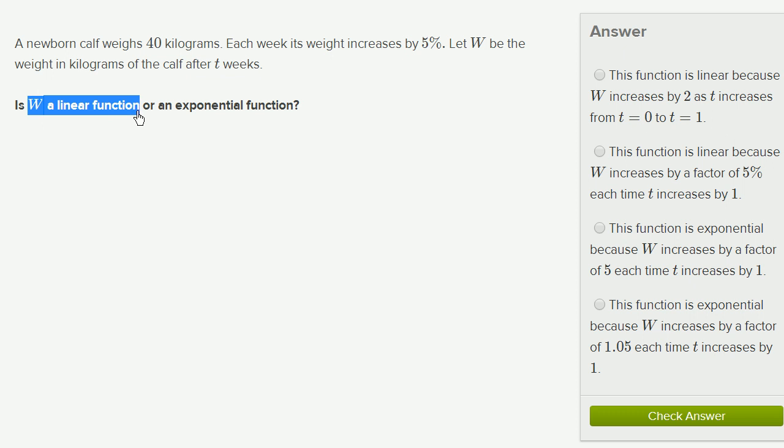So if w were a linear function, that means every week that goes by, the weight would increase by the same amount. Let's say that every week, the mass increased by 5 kilograms. Then we'd be dealing with a linear function. But they're not saying the weight increases by 5 kilograms. They're saying by 5%.